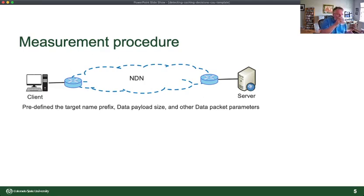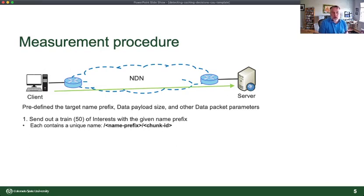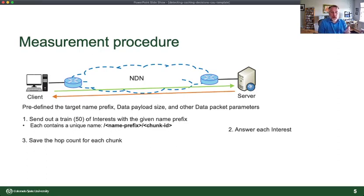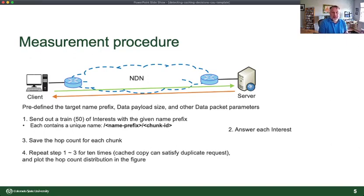And what you do is you send out 50 different interests for that prefix. You've got an answer for each interest. You save the hop count. You save how far away the chunk, how many hops through the network the chunk took. And then you repeat this step again, and again, and again.